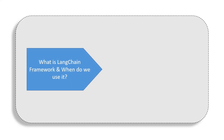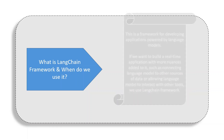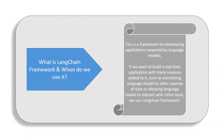We will start off by looking at what LLMChain Framework is and when do we use it. Simply put, this is a framework for developing applications powered by language models. In the last video, we have seen calling out to OpenAI's language model via an API, but if we want to build a real-time application with more nuances added to it, such as connecting a language model to other sources of data or allowing a language model to interact with other tools, we use LLMChain Framework.